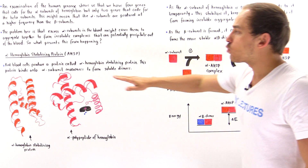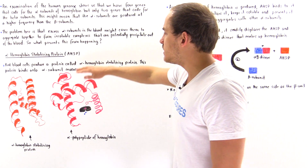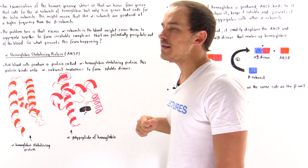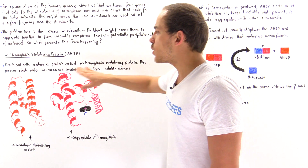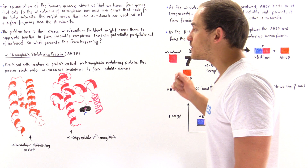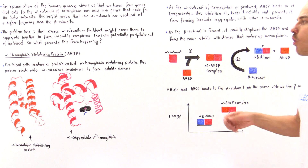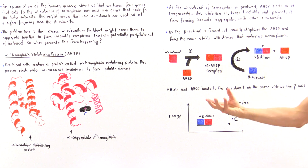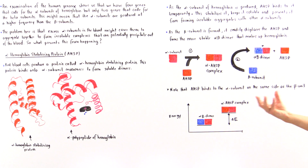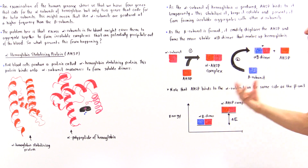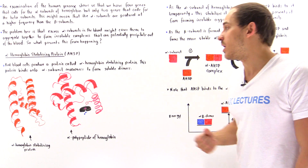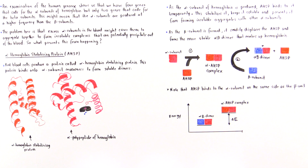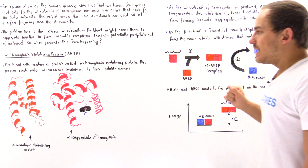Red blood cells produce a protein called alpha hemoglobin stabilizing protein. This protein binds onto the alpha subunit monomers to form soluble dimers, and this is precisely what prevents the aggregation of those alpha subunits to form insoluble precipitates that can precipitate out of the blood plasma and cause many different types of problems.